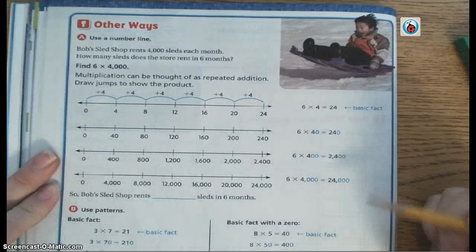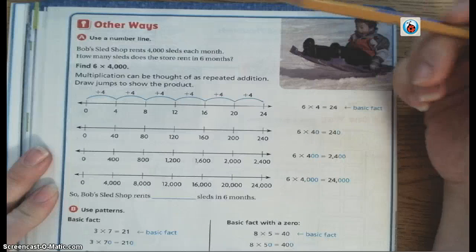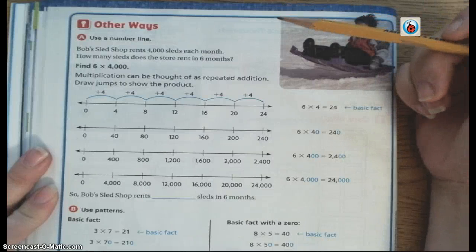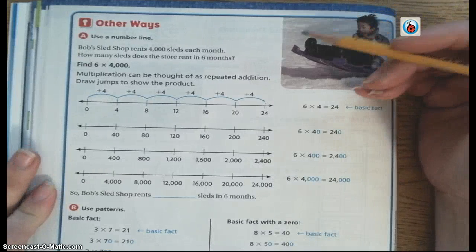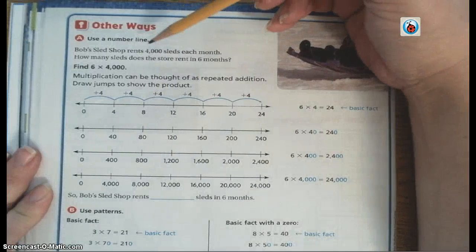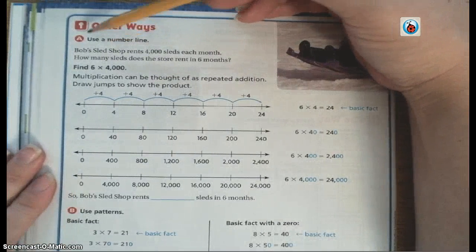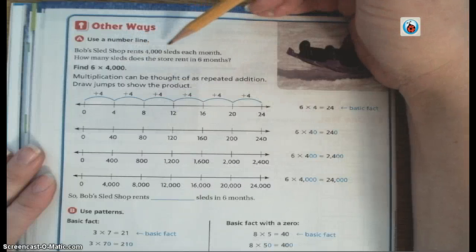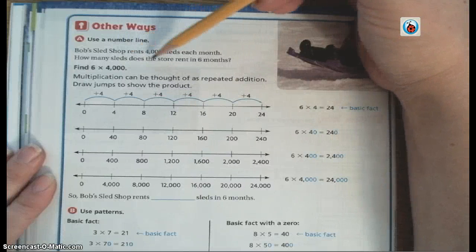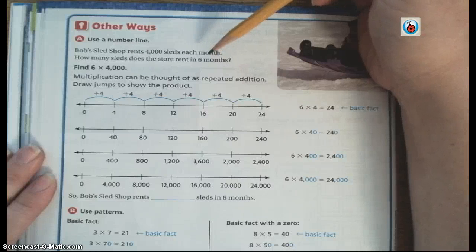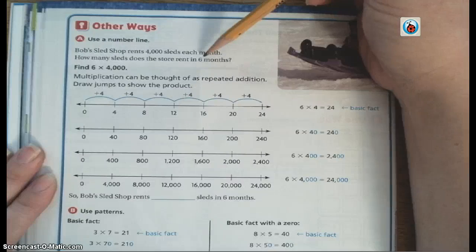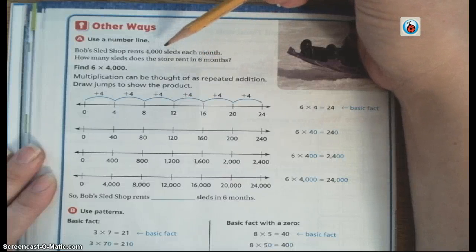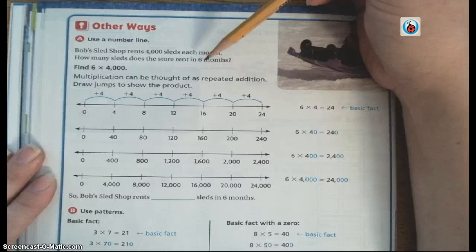Now we are moving on to page 76. This page is going to show us other ways to use place value to help us multiply tens, hundreds, and thousands. Part A, I'm going to use a number line. For this problem, it says, Bob's Sled Shop rents 4,000 sleds each month. How many sleds does the store rent in six months? So first of all, I know that this is a multiplication problem because I'm taking equal groups, because each month it's the same amount.